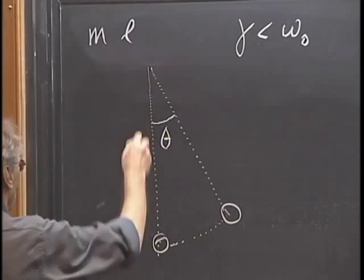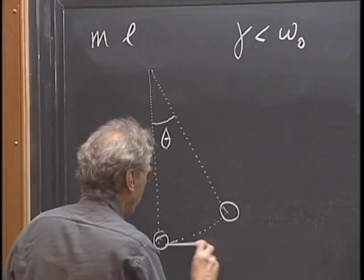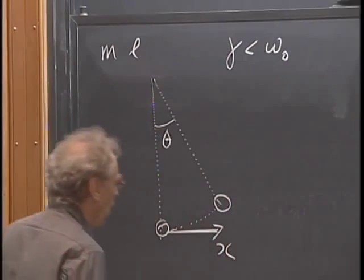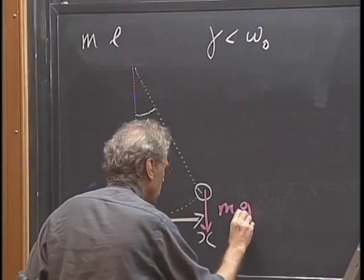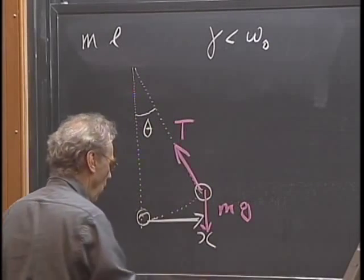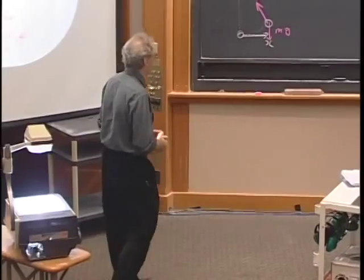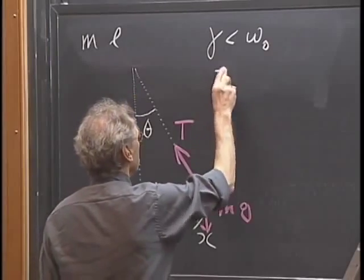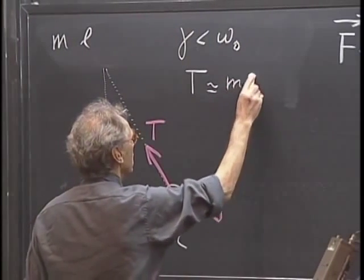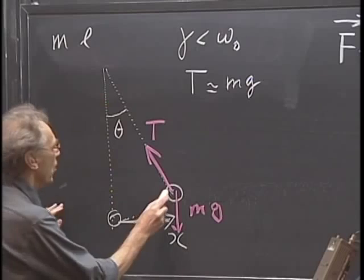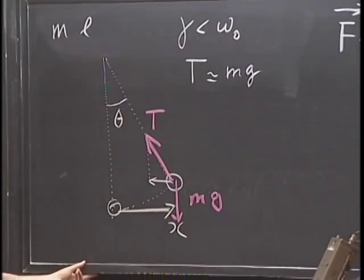So I have a pendulum with mass M and length L, and I will assume the mass of the string is negligibly small. I have damping, and this is the case where gamma is smaller than omega zero. This is the equilibrium position of the pendulum; I call this position X. Putting all forces on this object: mg downward, and tension T. For small angles, T is very close to mg, so the only restoring force is the horizontal component of T.